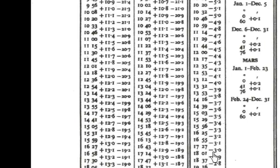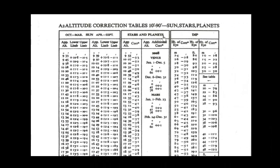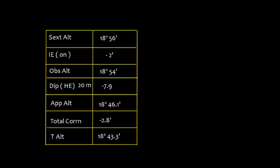So here, in this between 18° 37' and 19° 16', I have this minus 2.8'. That is the total correction for this apparent altitude, and this is applicable for stars and planets. So I get this value, which is 18° 43.3'.